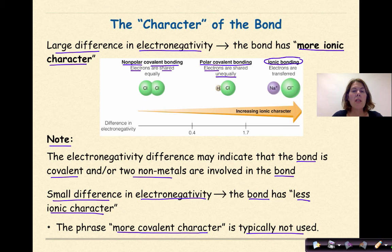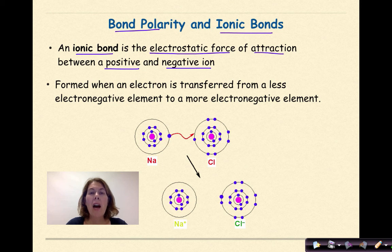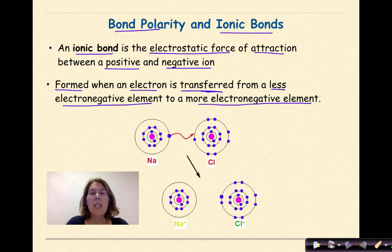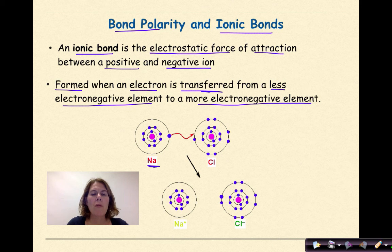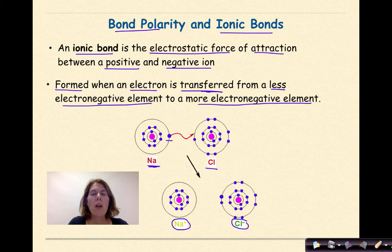An ionic bond is the electrostatic force of attraction between a positive and negative ion, formed when an electron is transferred from a less electronegative element to a more electronegative element. Less electronegative elements in ionic bonds are typically metals — like sodium giving up its one valence electron to chlorine, which is the nonmetal that accepts it to complete its octet. Sodium becomes Na⁺ and Cl becomes Cl⁻, forming the ionic bond.